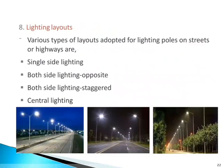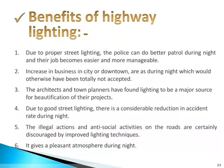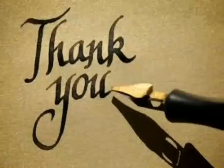Lighting layout: various types of layouts adopted for lighting poles on a street or highway are single side lighting, both side lighting opposite, both side lighting staggered, and central lighting. Benefits of highway lighting: due to proper street lighting, police can do better patrol during night and their job becomes easier and more manageable. There is an increase in business in city or downtown areas during night. Architects and town planners have found lighting to be a major source of beautification. There is a considerable reduction in accident rate during night, and illegal and anti-social activities on roads are discouraged by improved lighting. It gives a pleasant atmosphere.